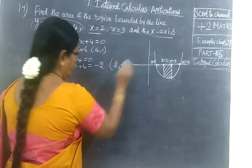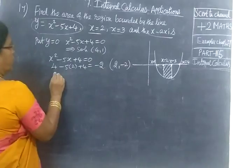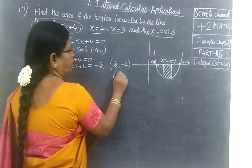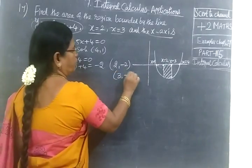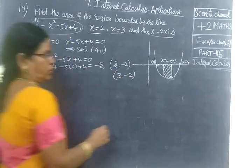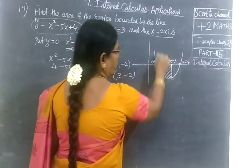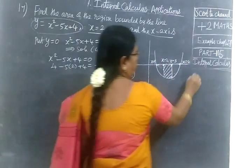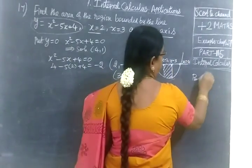For x equal to 3: y equals 9 minus 15 plus 4 equal to minus 2. So the parabola is below the x-axis in this interval.